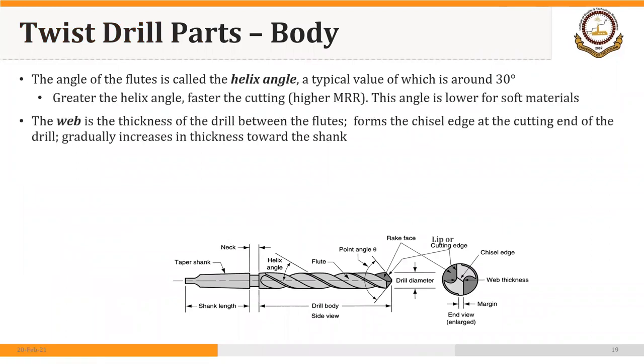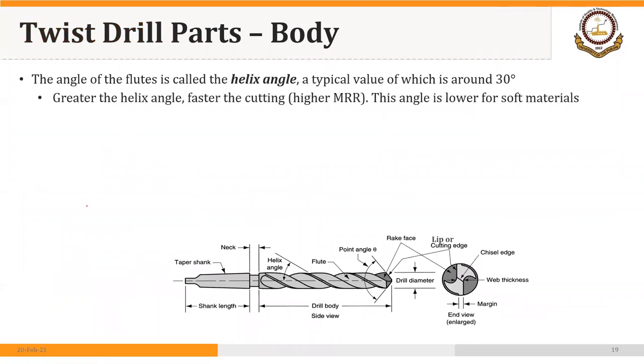Then we have the helix angle. You can see the helix angle here. The angle that is measured with respect to the axis of the drill is called the helix angle. Its typical value is around 30 degrees. Greater the helix angle, faster the cutting, and greater will be the material removal rate. This angle is lower for soft materials and higher for harder materials.